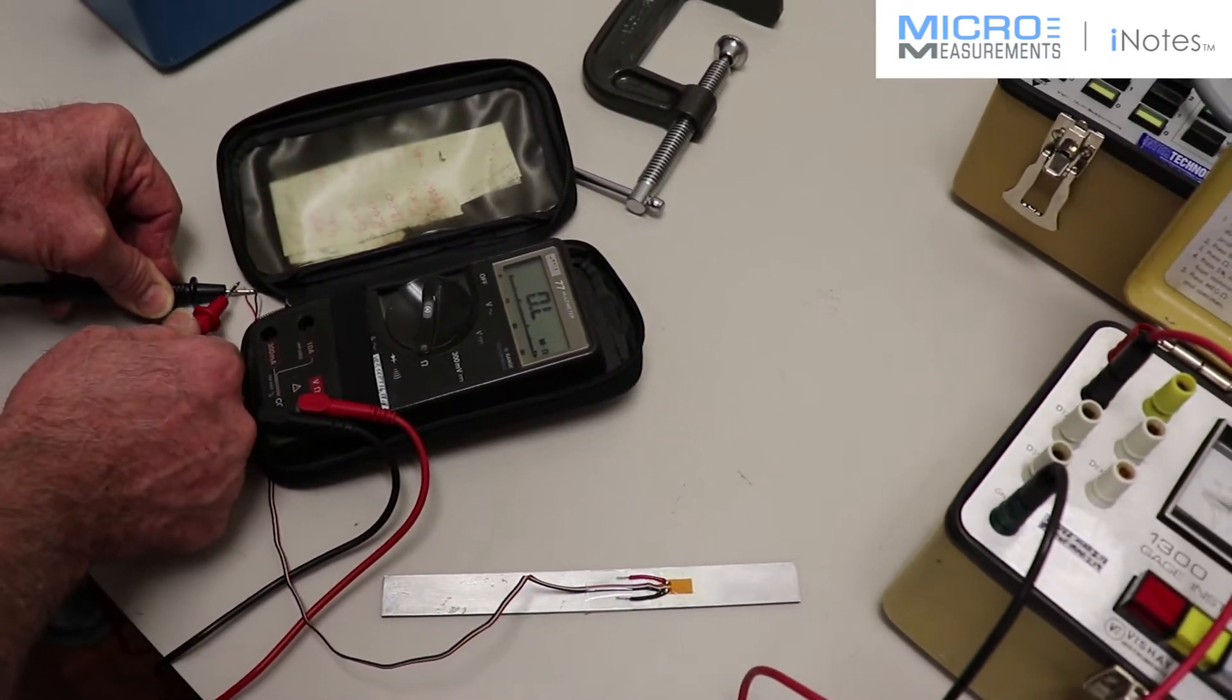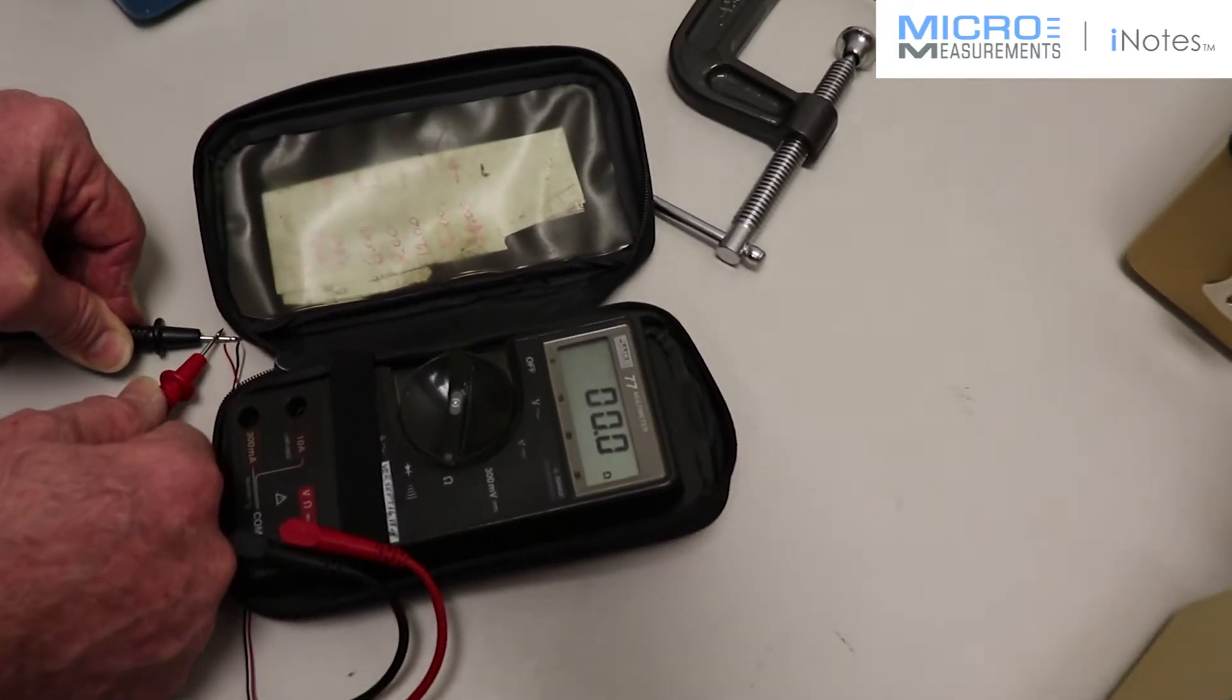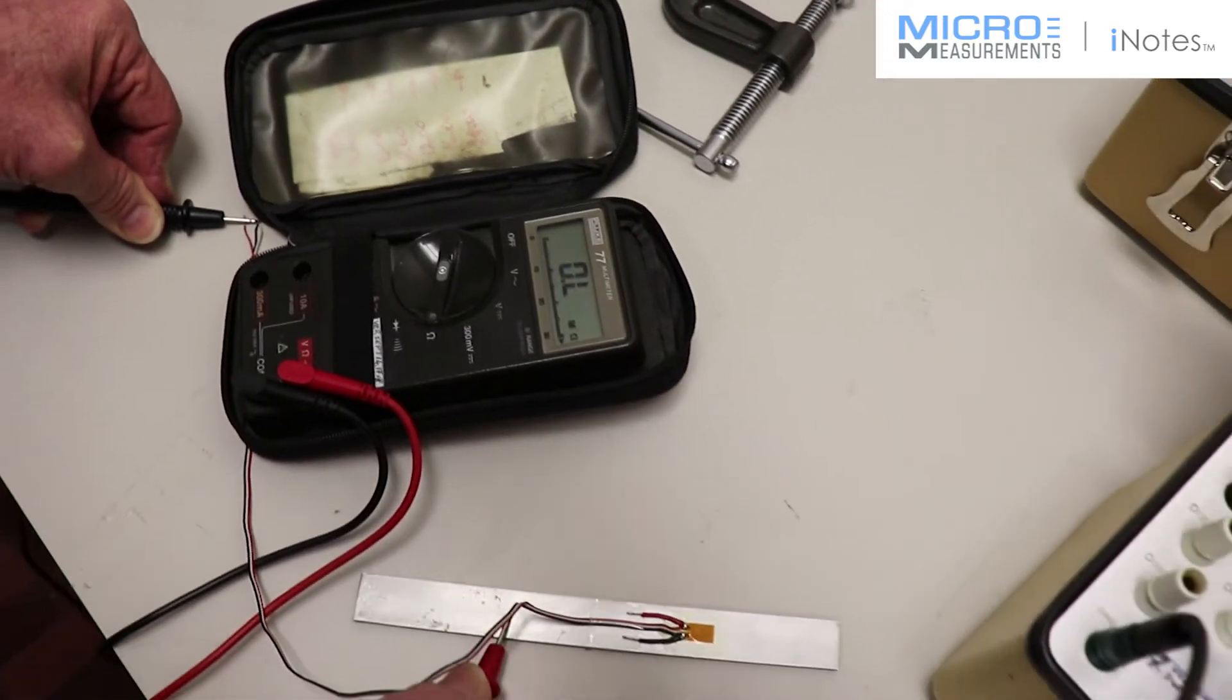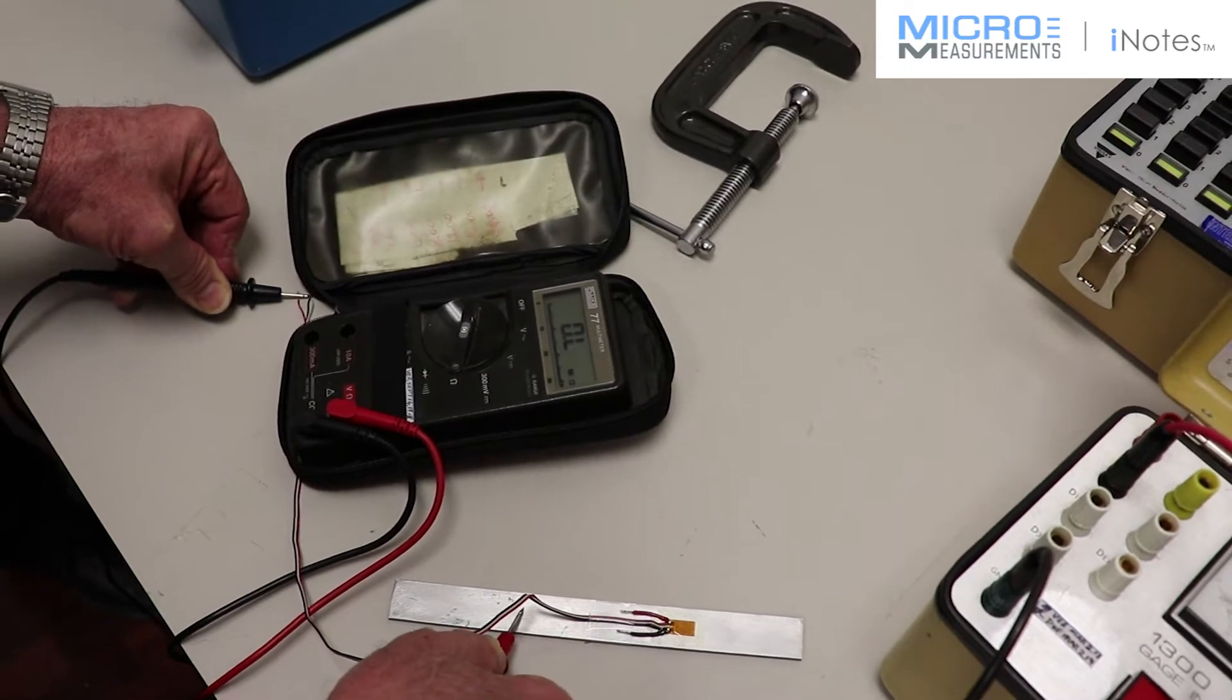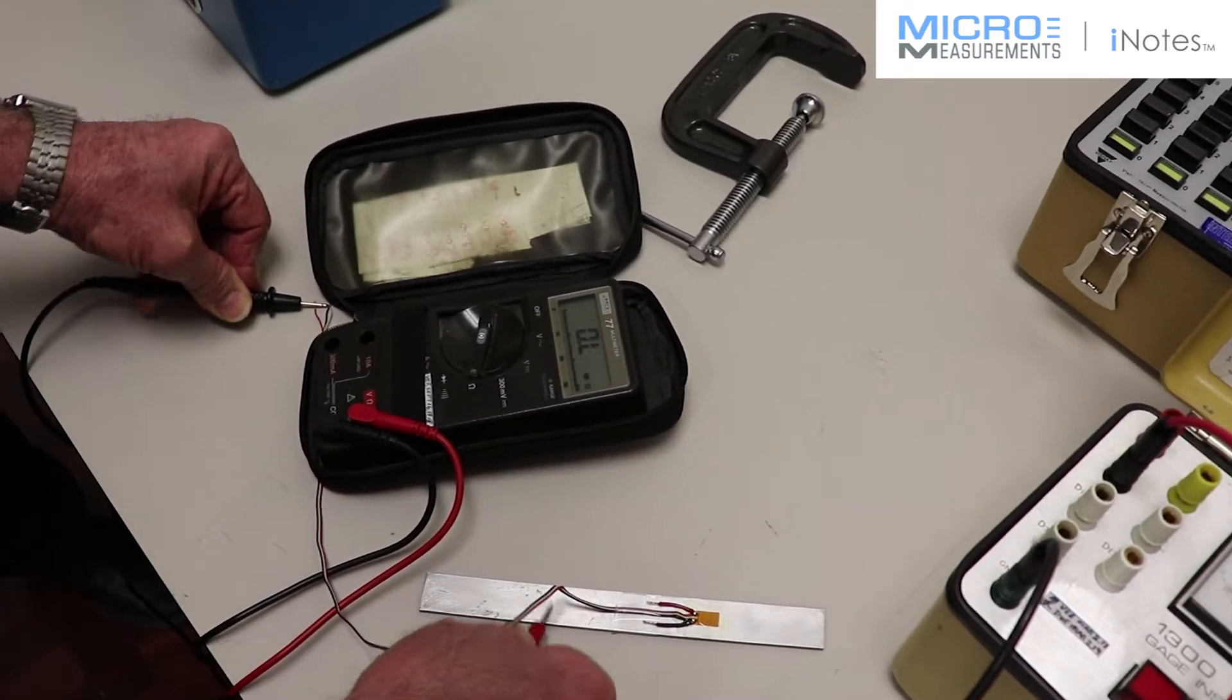So if I touch the probes together here, we can see that it goes to 0.1 or basically zero ohms. There's a short circuit between the probes. So I am measuring that over there. Ground looks to be open, which seems to appear to be a good reading. However...